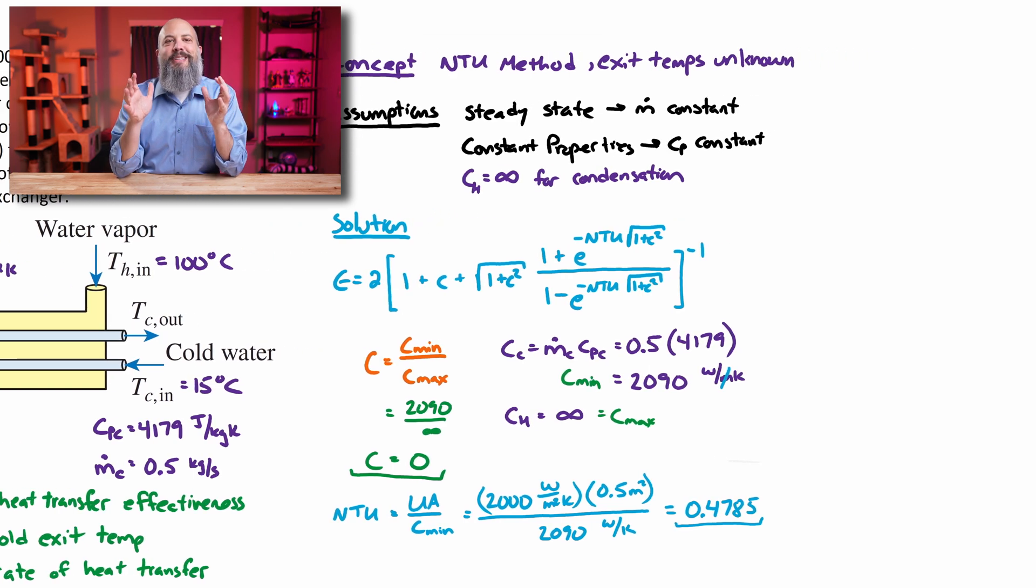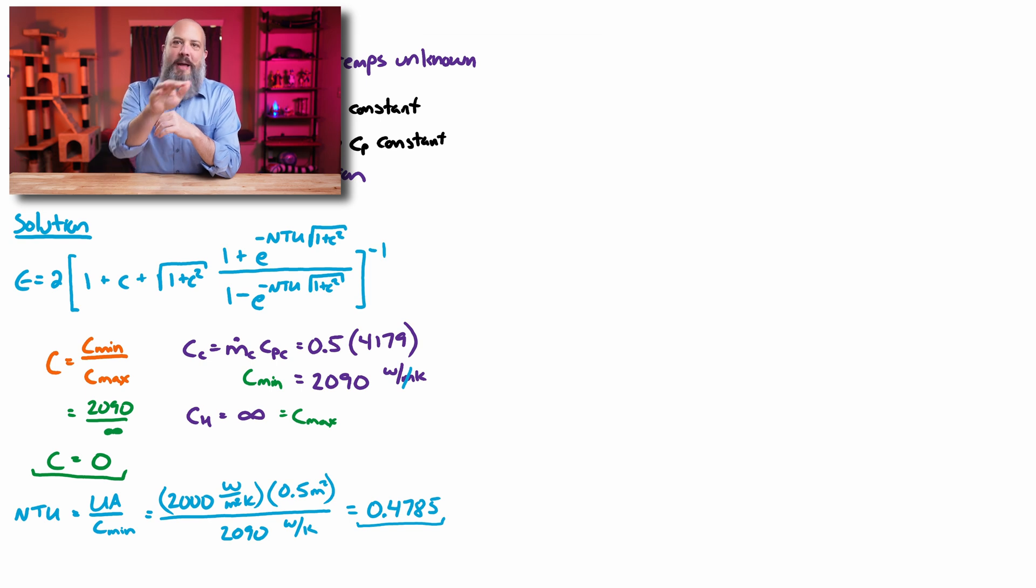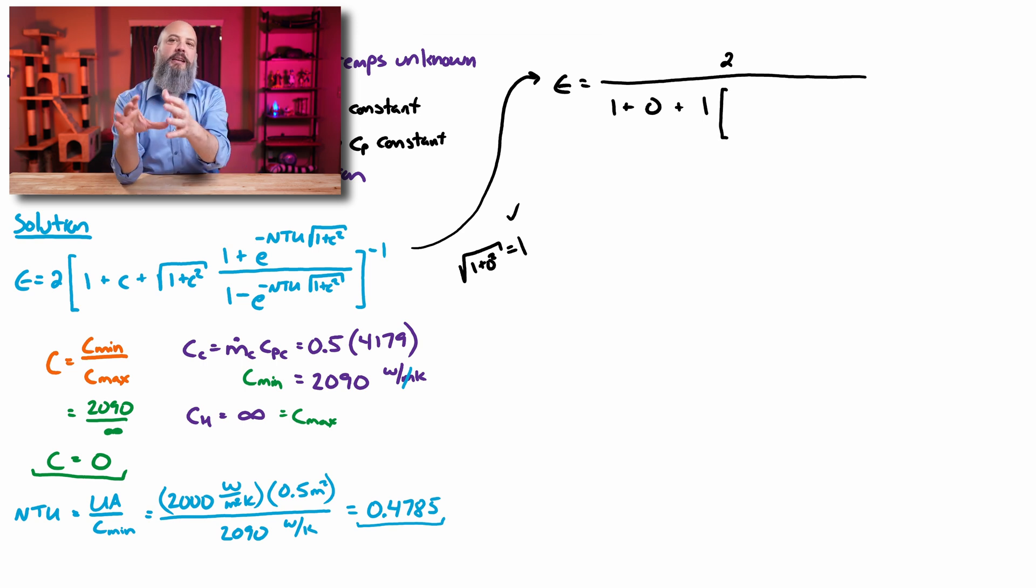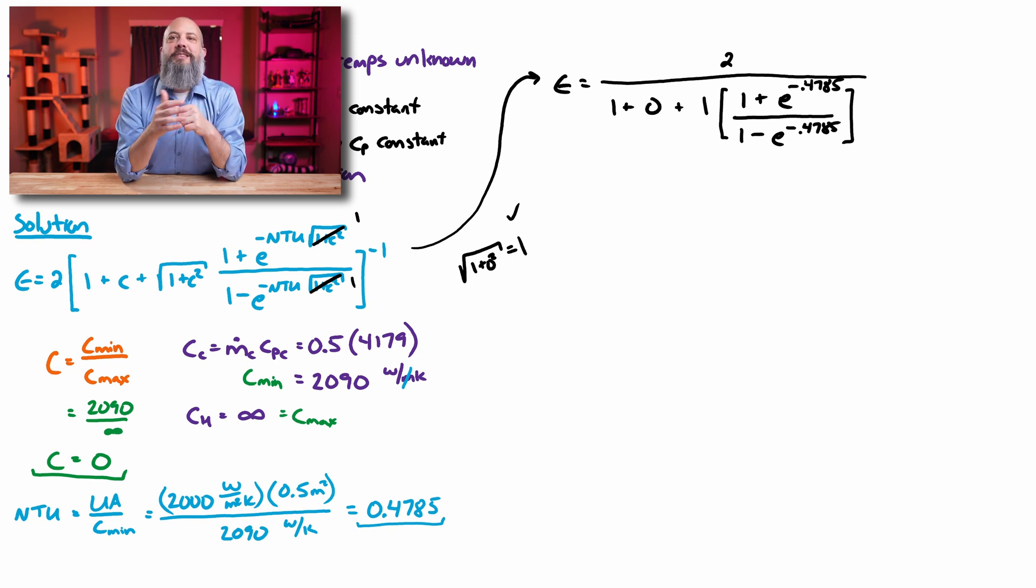So plug in these numbers into this effectiveness equation. I'm going to write this as a fraction, two divided by everything instead of two times stuff to the negative one power. This should always be an effectiveness between zero and one. Effectiveness is like a percentage. In your denominator, you'll see there's a one plus C, the heat capacity ratio, which in our case was zero. That bracketed term should always be greater than one. Your denominator will always be greater than two. So in this case, we get an effectiveness of 0.38, or 38% effective.